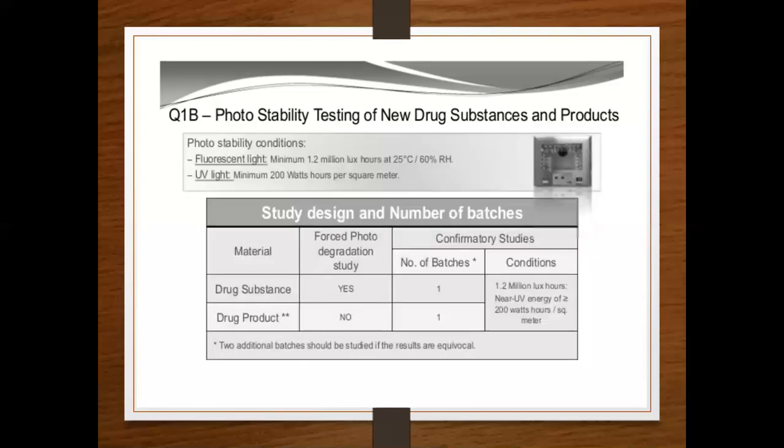Photostability testing conditions: for visible light, a minimum of 1.2 million lux-hours at 25°C and 60% RH is required; for UV light, a minimum of 200 watts per square meter. For study design and number of batches — confirmatory studies require two batches, plus one forced photodegradation study. Two additional batches should be studied if the results are equivocal.